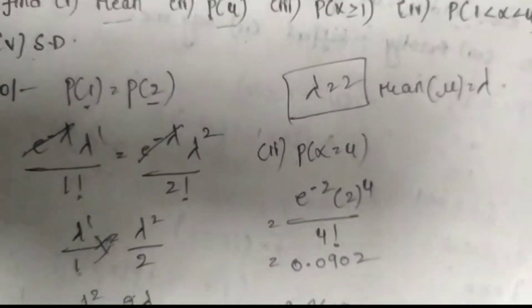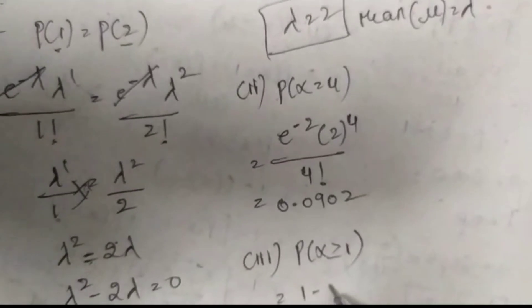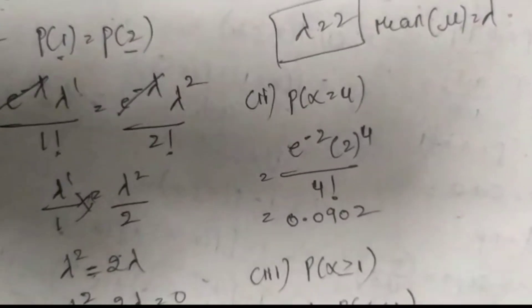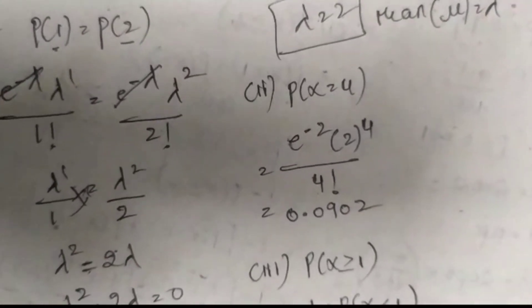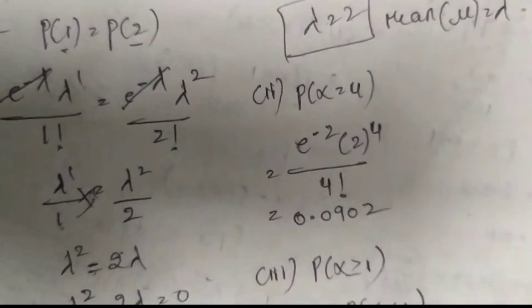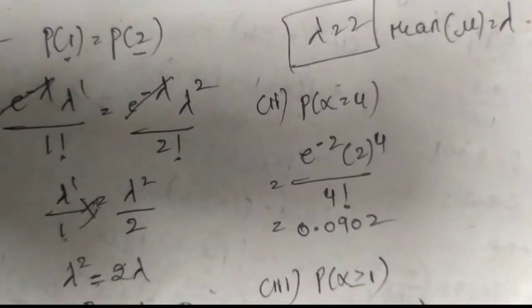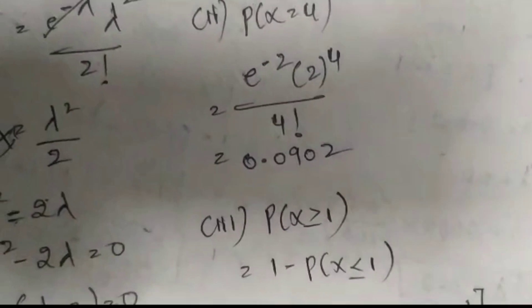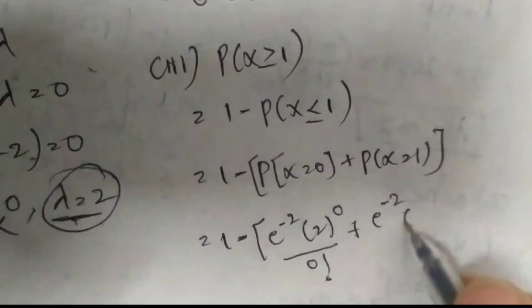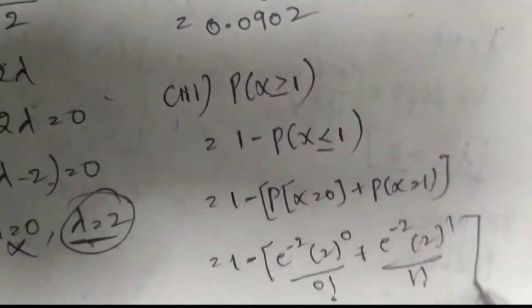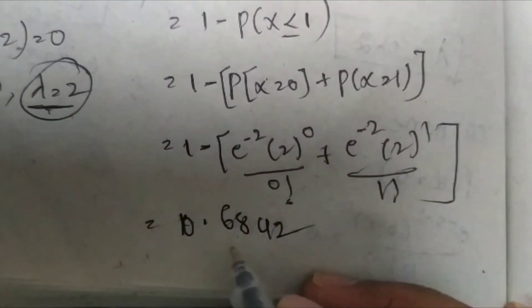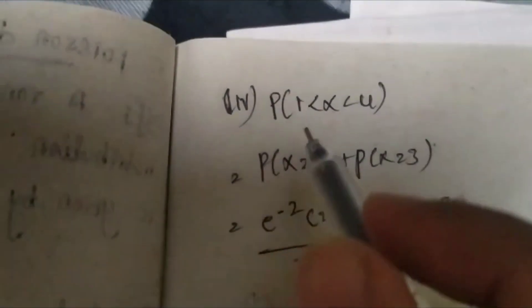Next, finding P(X ≥ 1), which equals 1 − P(X < 1) = 1 − P(X = 0). Substituting in the formula: 1 − [e^(−2) × 2^0 / 0! + e^(−2) × 2^1 / 1!]. Calculating in the Casio, we get the answer 0.6842.